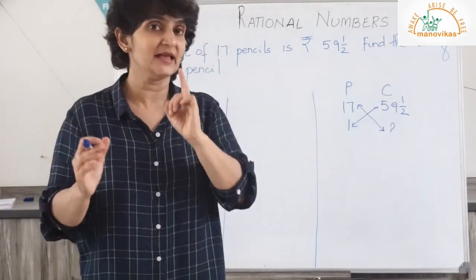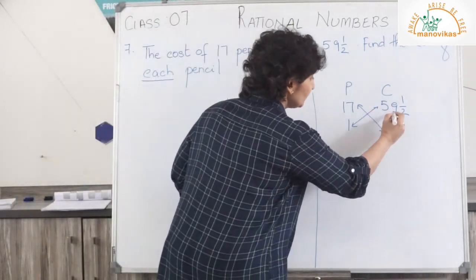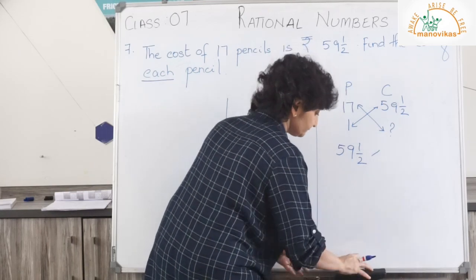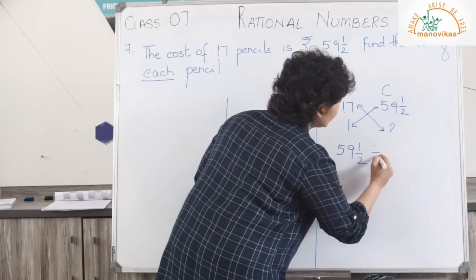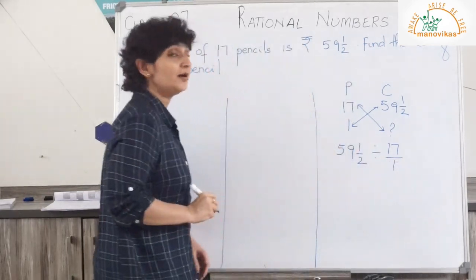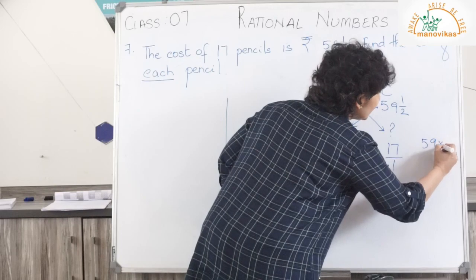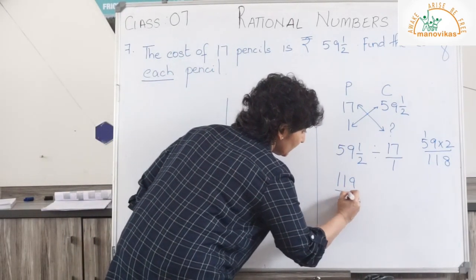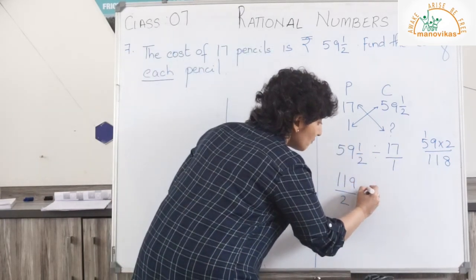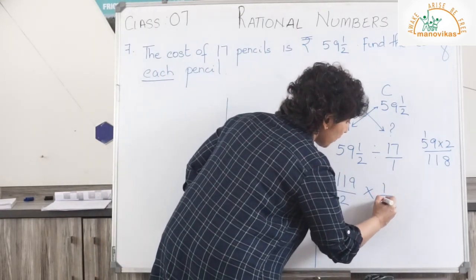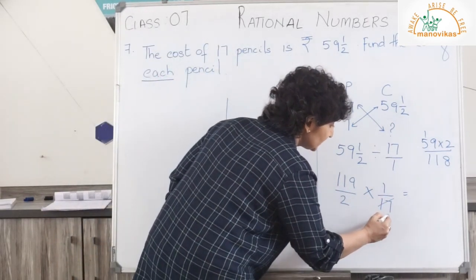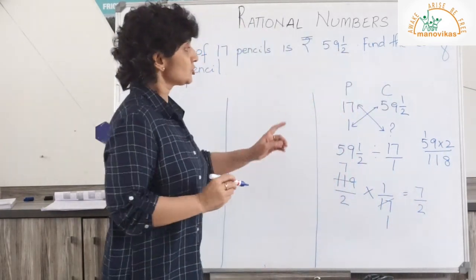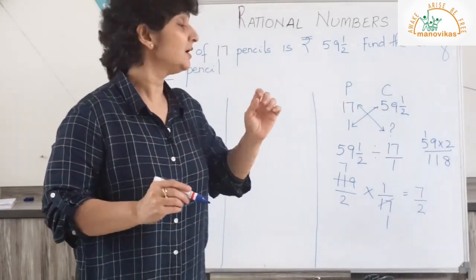When the cost of one is given and you need to find more, we multiply. So here I get 59 and a half divided by 17. Now 59 and a half as an improper fraction is 119 upon 2. Divide becomes multiply, and 17 upon 1 becomes 1 upon 17. If you know your tables, 17 goes into 119 seven times, so I get 7 upon 2.